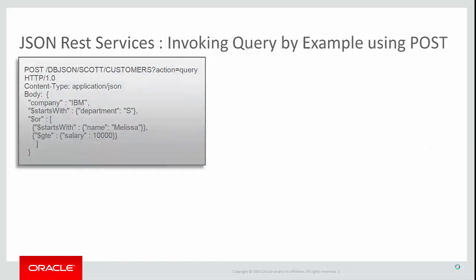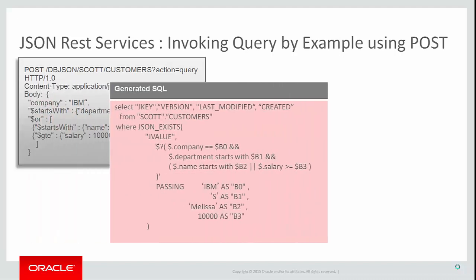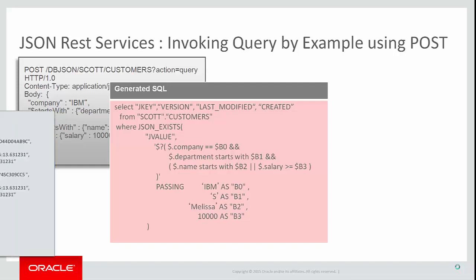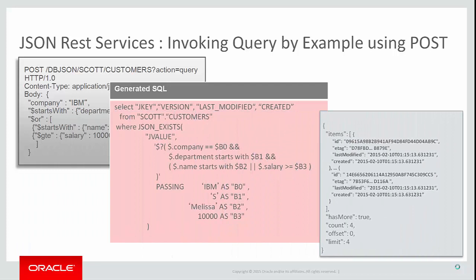Here's an example of using the query by example service. We invoke it by performing a POST operation on the URL mapped to the collection and appending the parameter action=query to the URL, setting the content type to application/JSON, and supplying the QBE specification as a JSON document in the body. SODA for REST invokes the search capabilities of SODA for Java, and the QBE is translated into a SQL expression that makes use of the new JSON_EXISTS operator to perform a search on the JSON content stored in the collection. The application developer needed no knowledge of SQL in order to use the QBE service.